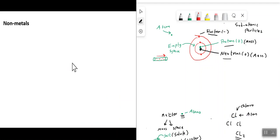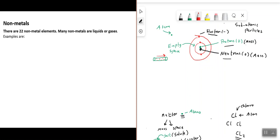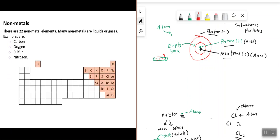The next kind of materials are non-metals. There are 22 non-metal elements and many are liquids or gases. Some examples are carbon — the main building block of all life — oxygen, sulfur, nitrogen, and others. On the periodic table, all the non-metals are grouped together on one side.